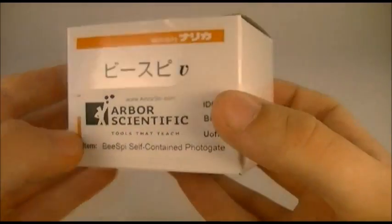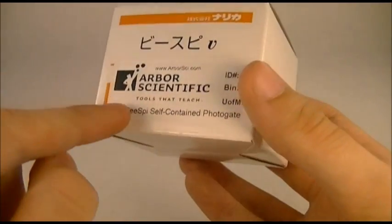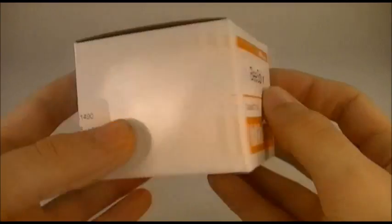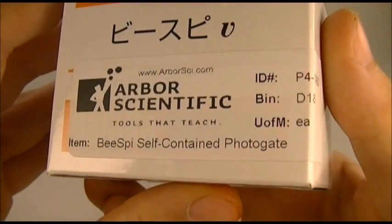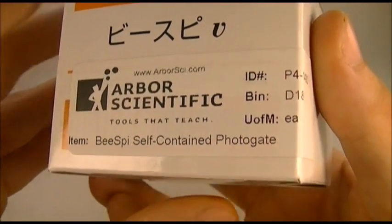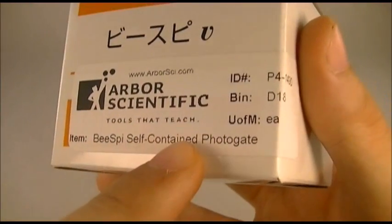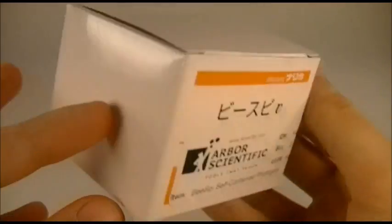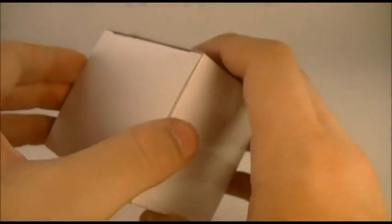So one side here is in Japanese. I can only assume that whatever is being covered up by this sticker is the same as it is on this side but in Japanese. I got this from Arbor Scientific. As you can see, it's a self-contained photogate and we'll get to exactly what that is in just a little bit here.